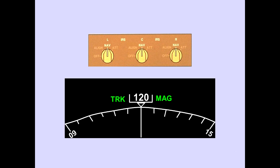When alignment is complete, the IRS enters the navigation mode. The IRS's will now provide valid signals. The NAV mode is most evident when heading information is displayed on the navigation display.